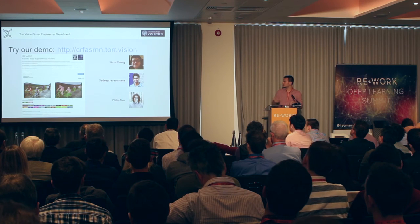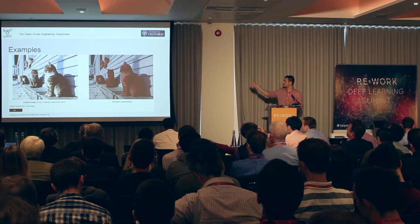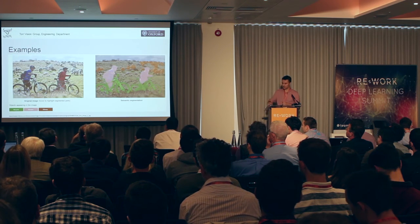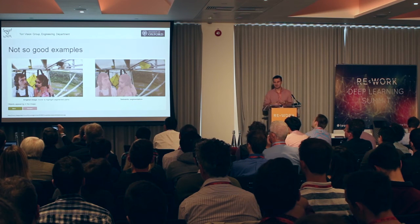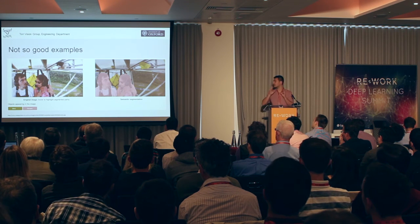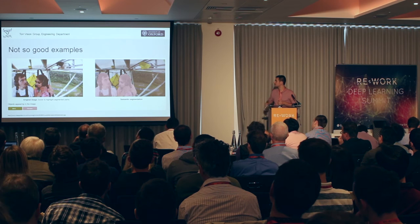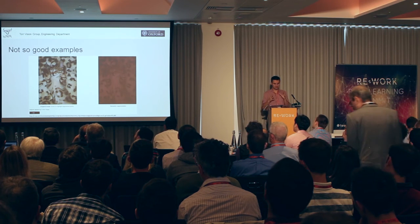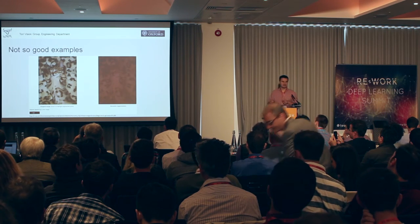I'm going to show a few examples that you can obtain with this. This is a good example where the network performs really well, being able to segment several cats. This is another good example where it segments different kinds of objects. However, the model doesn't always work well — sometimes it fails. One kind of mistake is when it classifies an object as something else, for example where the cat appears to be a bird. A different kind of error happens when the object is properly recognized but the segmentation is poorly done, though these kinds of errors are less common.